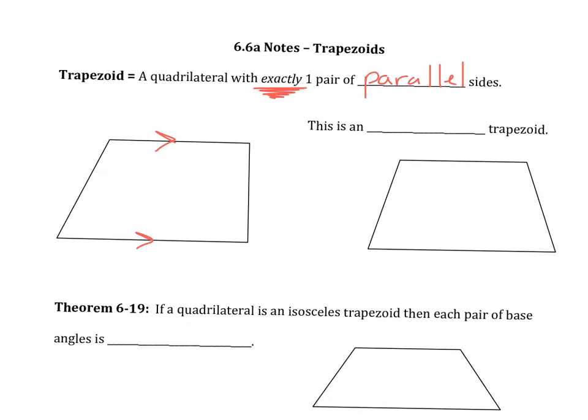The other two are called your legs. So the two that are not parallel are the legs, and then the two that are parallel are your bases. And then the two angles that fall on the same base are called base angles. So these two together would be base angles, and then these two together would be base angles. And that is a trapezoid.